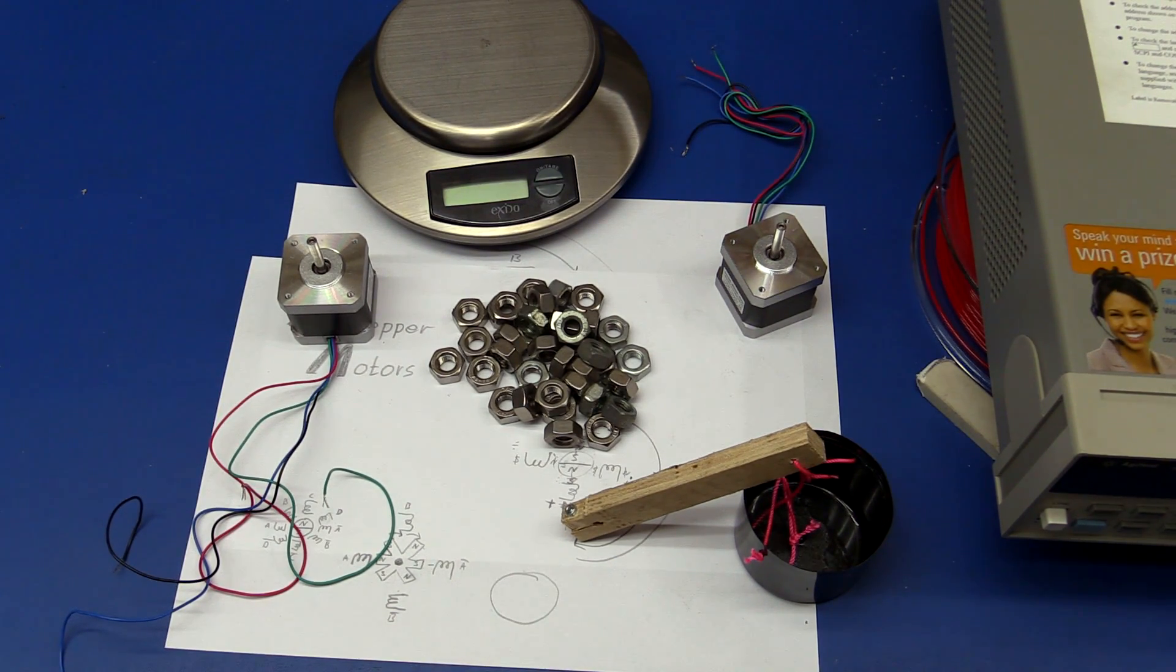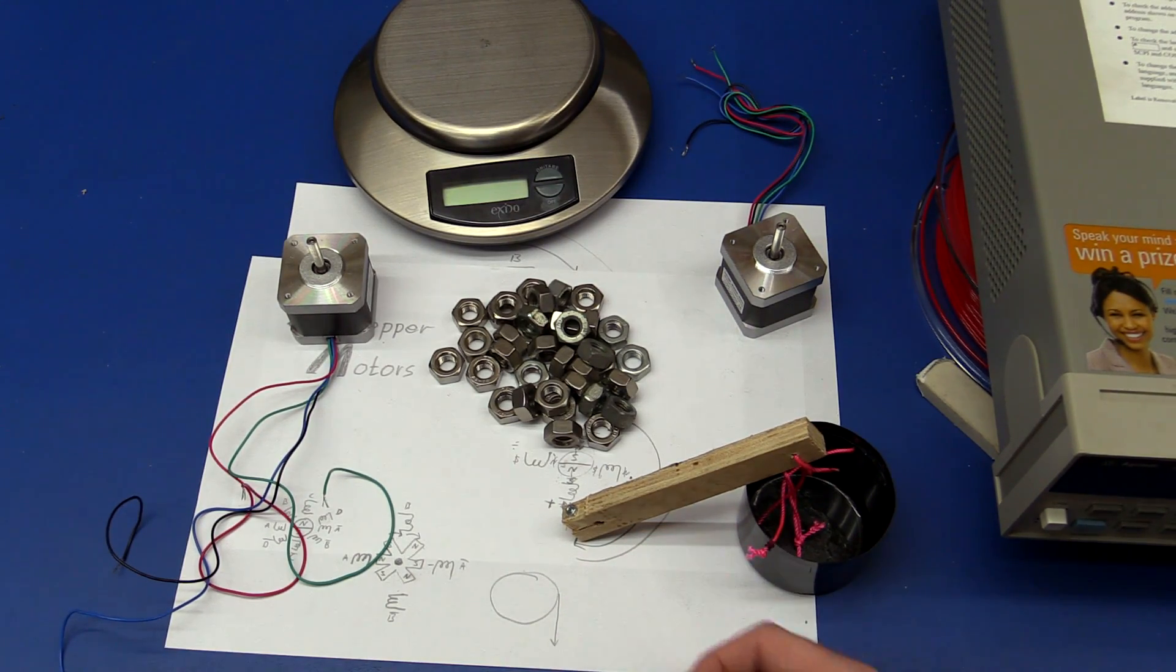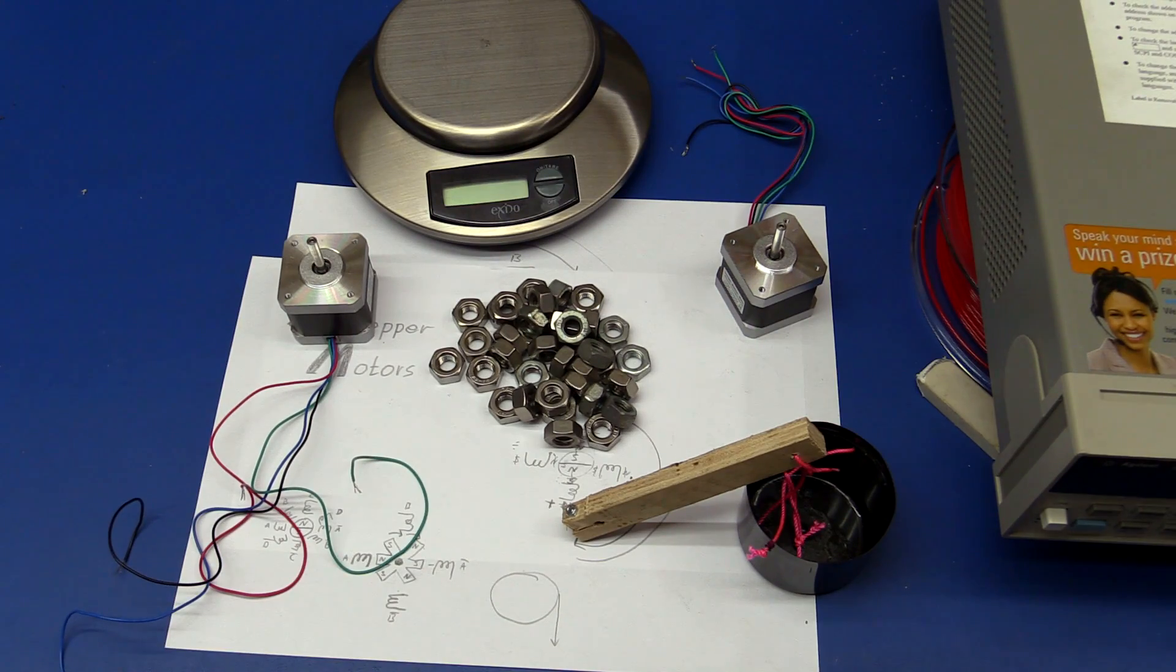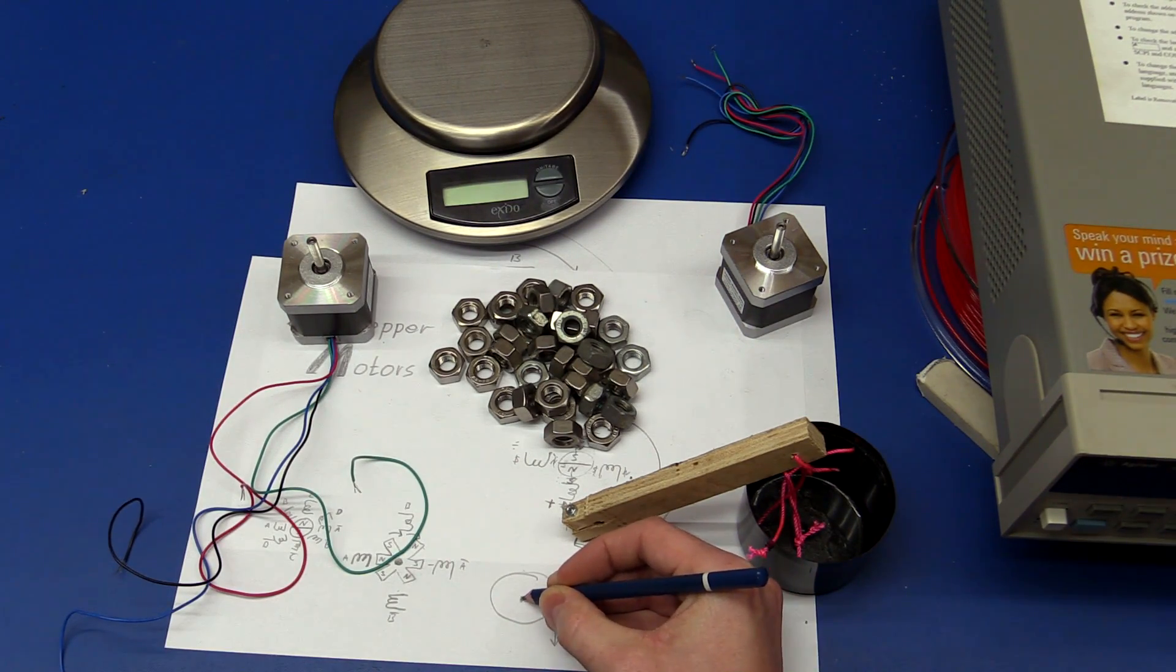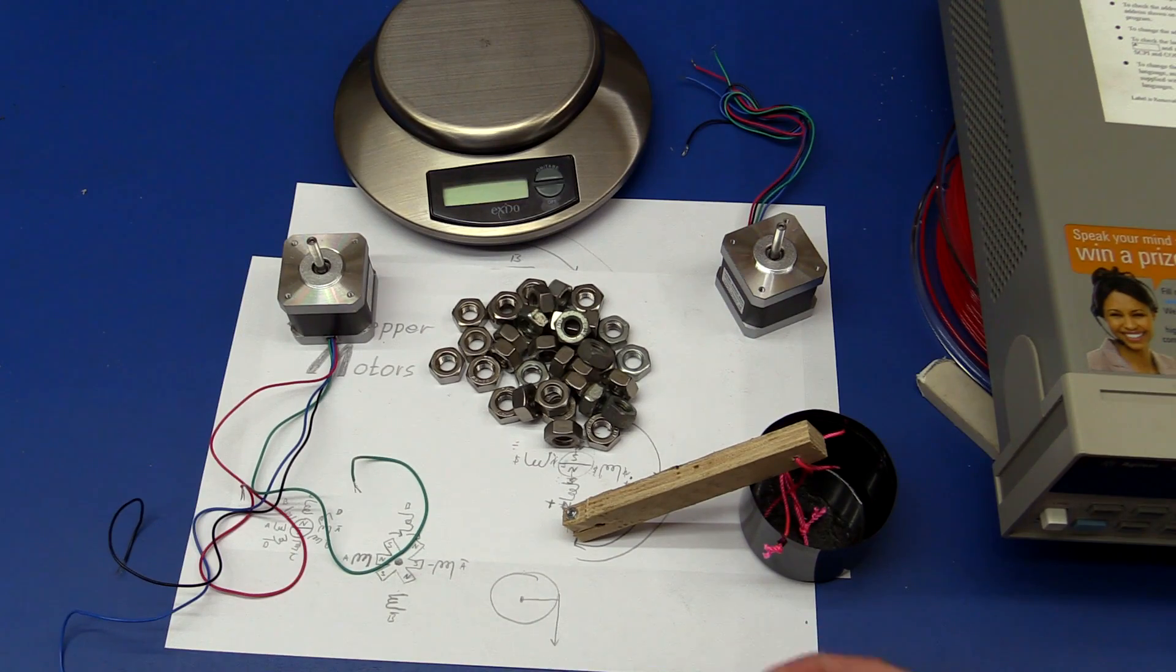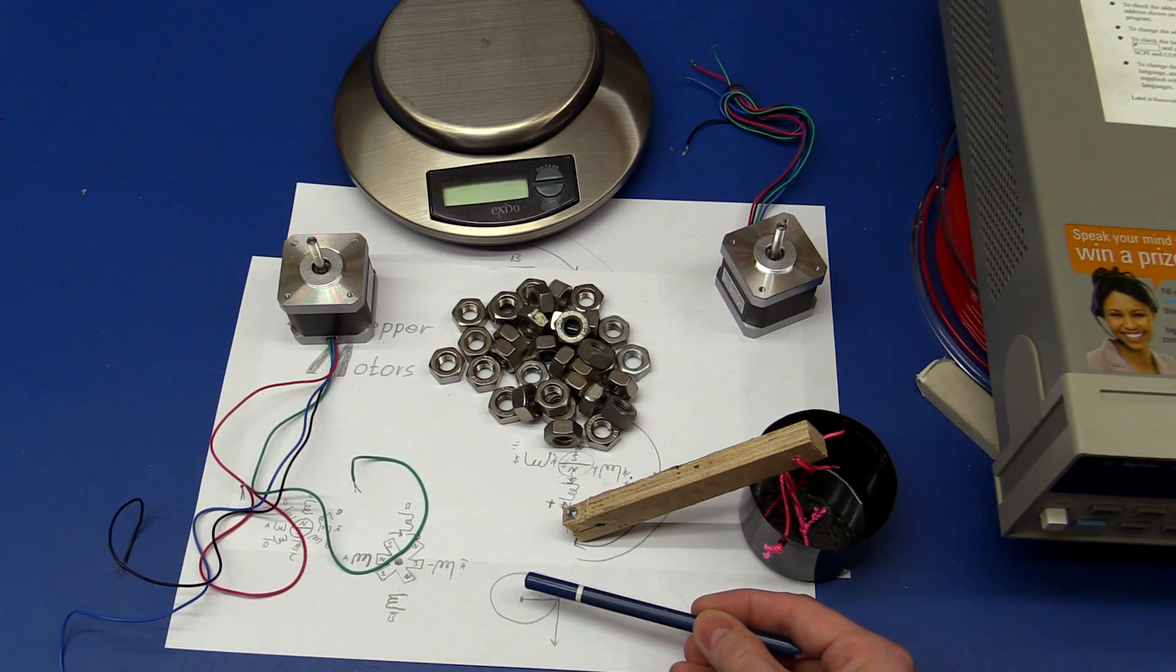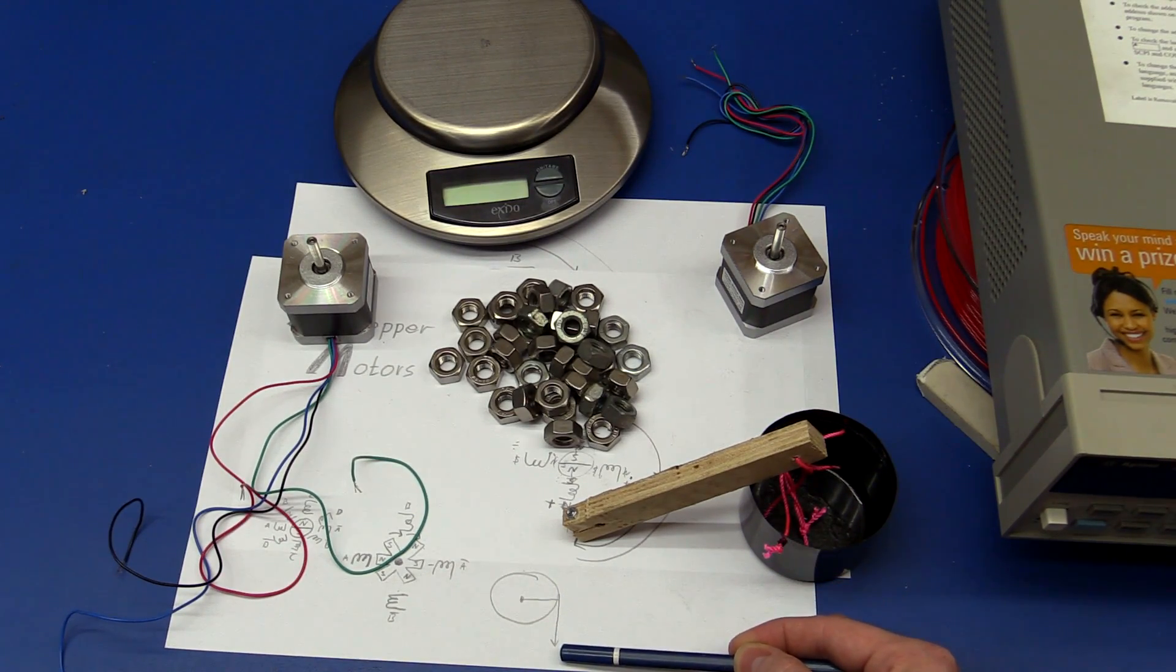So to measure the holding torque we can apply a tangential linear force that will rotate the rotor. The force has to be perpendicular to the radius, and since we're using gravity that will always face down, so we will just make this horizontal. And by knowing this distance and the amount of mass that we put on here we can calculate the torque.